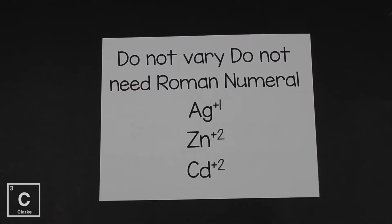We've got silver. Silver is always a plus one. Zinc and cadmium always a plus two. Go ahead and write in those squares on your periodic table that silver is a plus one, zinc is a plus two, and cadmium is a plus two. Go ahead and pause if you need to do that.